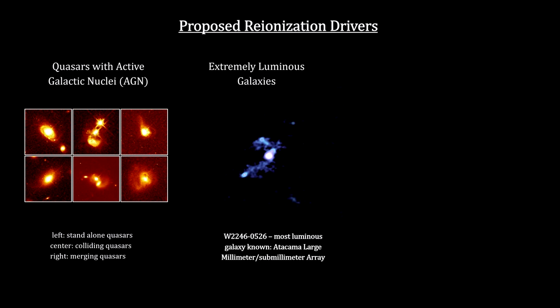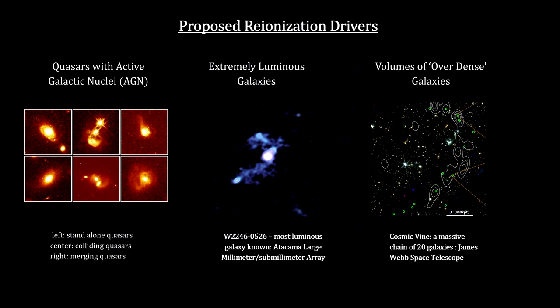The identification of sources driving cosmic reionization has been a matter of debate for decades. Some suggest that quasars could be the source. Others propose that bright galaxies generate sufficient ionizing radiation to drive this process. Others think it would take over densities of multiple galaxies to do it.